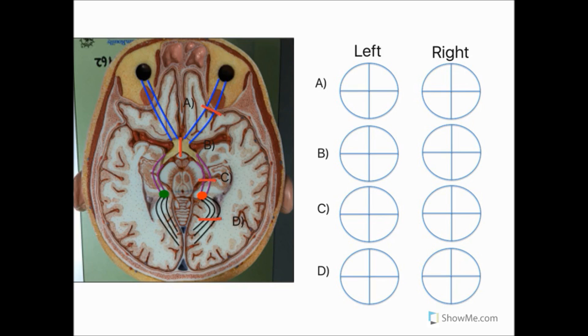Alright, so as I go through each of the lesions A, B, C and D, I'll be drawing the effect that these lesions have on the visual fields on the right hand side, where I've got the visual fields of the left and the right eye with the corresponding lesions of A, B, C and D. So let's start with lesion A, which is within the optic nerve.